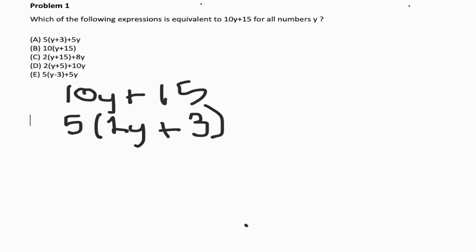And I'm looking at the y plus 3 in parentheses for letter choice A. That looks good to me because if we were to multiply that back in, 5 times y plus 3, right? If we were to distribute that 5, we'd get 5y plus 15.